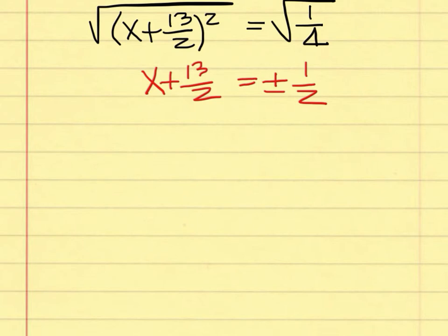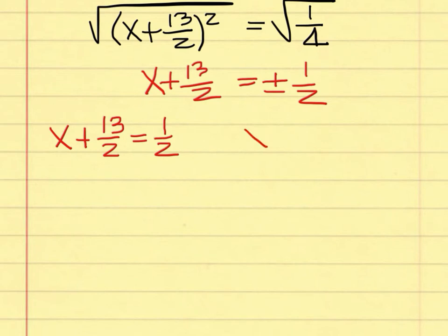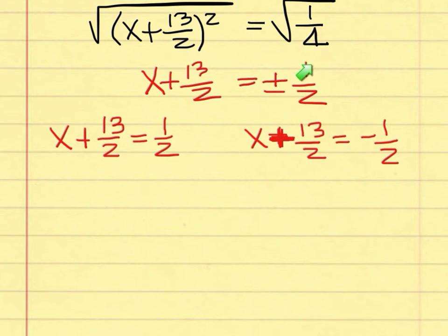A student explains the next step: you write x plus 13 over 2 equals one-half, and then write it again with the negative. That's right — x plus 13 over 2 equals 1 over 2, and x plus 13 over 2 equals negative 1 over 2. Since this is plus or minus, you write the equation twice: once with a positive half and once with a negative half.